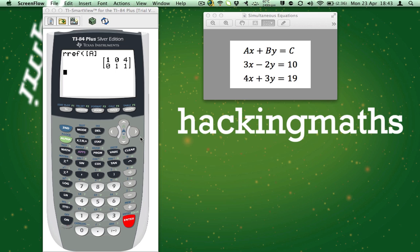But what does this result mean? Well, as we put all our x values into the first column, our y values into the second column, and our numbers into the third column, this means that 1x equals 4 and 1y equals 1.